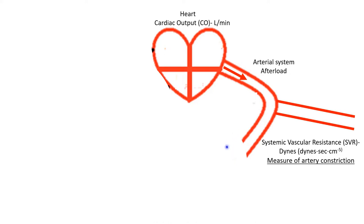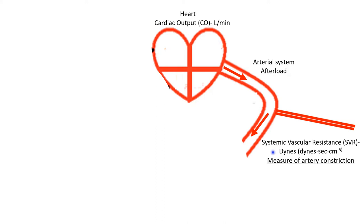If there's a lot of metabolic activity going on — low oxygen and high CO2 — that's a signal to vasodilate. Where there's not much activity, the body will vasoconstrict, and blood will follow the path of least resistance to where it needs to go. We can measure the degree of arterial constriction as systemic vascular resistance, measured in dynes. Remember: systemic vascular resistance is a measure of arterial constriction — it is not the same as blood pressure, which is commonly confused.